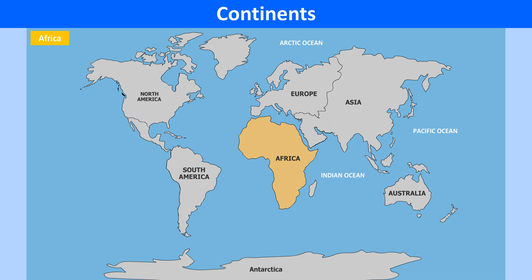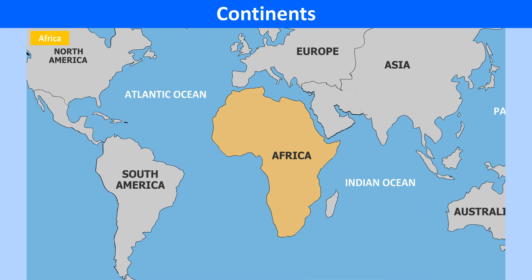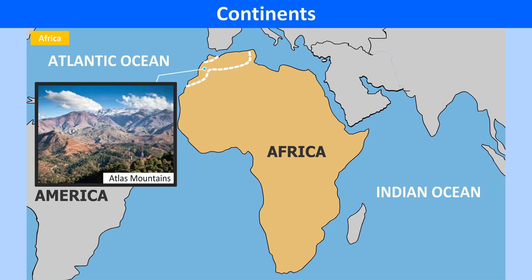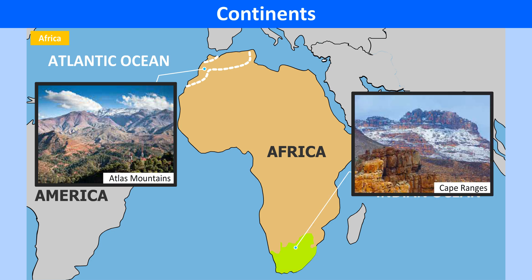Africa is the second largest continent in the world, covering about one-fifth of the Earth's land surface. The continent is surrounded by the Atlantic Ocean in the west and the Indian Ocean in the east. Africa is joined to Asia by the Isthmus of Suez. Most of Africa is a vast plateau, with the Atlas Mountains in the north-west and the Cape Ranges in the south.